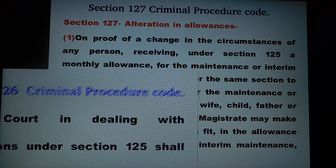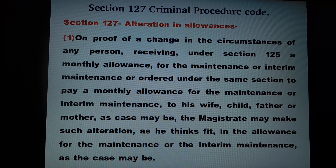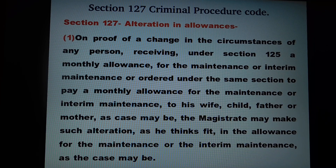Now we will see section 127 of CRPC, i.e. alteration in allowances. As per subsection 1 of section 127, on proof of a change in the circumstances of any person receiving under section 125 a monthly allowance for the maintenance or interim maintenance, or ordered under the same section to pay a monthly allowance for the maintenance or interim maintenance to his wife, child, father or mother as the case may be, the magistrate may make such alteration as he thinks fit in the allowance for the maintenance or interim maintenance as the case may be.